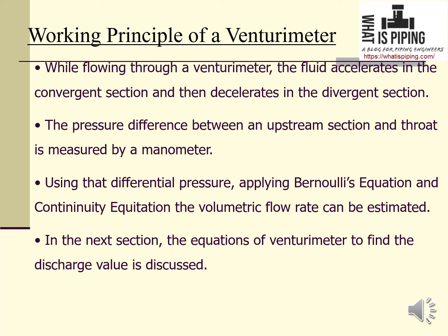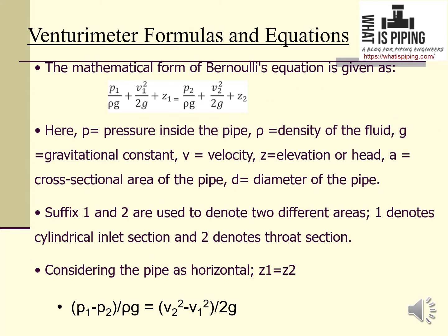The mathematical form of Bernoulli's equation is: P1/ρg + V1²/2g + Z1 = P2/ρg + V2²/2g + Z2. Suffixes 1 and 2 denote the cylindrical inlet section and throat section respectively. Here P is pressure, ρ is fluid density, g is gravitational constant, V is velocity, Z is elevation or head, A is cross-sectional area, and D is pipe diameter. For a horizontal pipe Z1 = Z2, so rearranging gives: (P1 − P2)/ρg = (V2² − V1²)/2g.